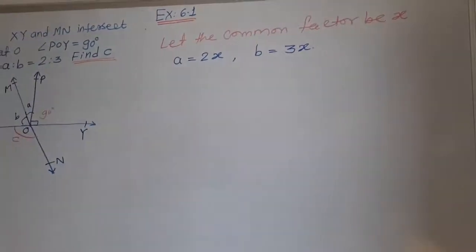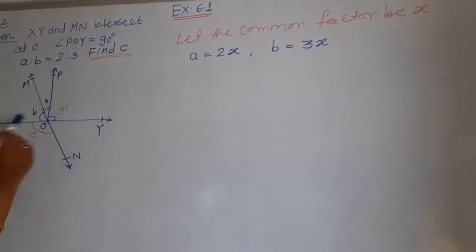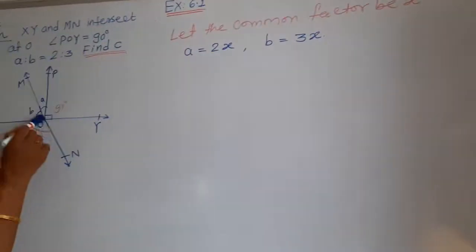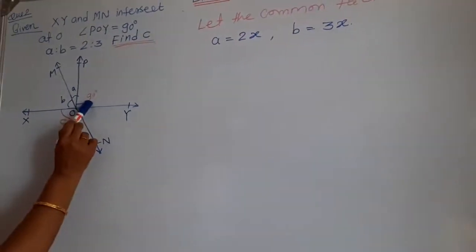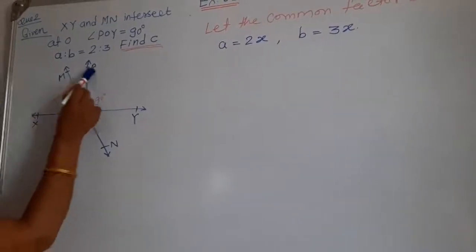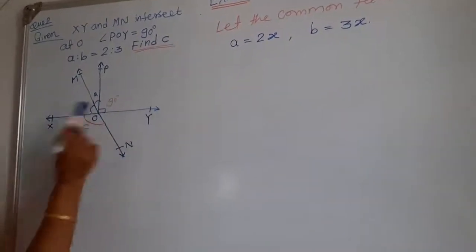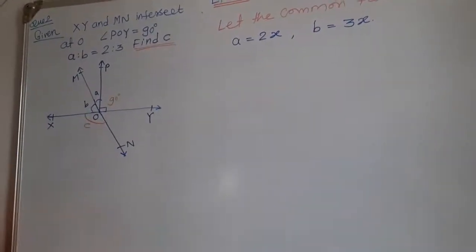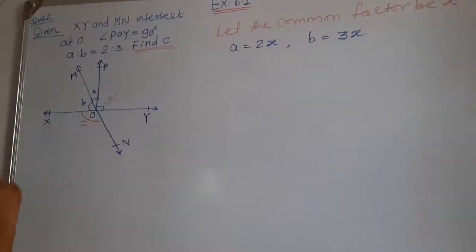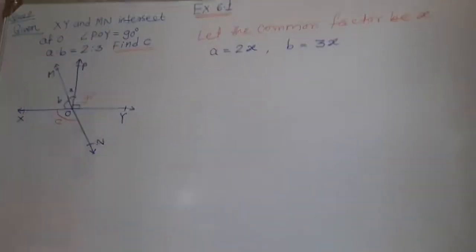Now one more thing: PO is perpendicular to XY because angle POY equals 90 degrees. And since angle POX and angle POY are both in a linear pair, the measure of angle POX is also equals to 90 degrees.